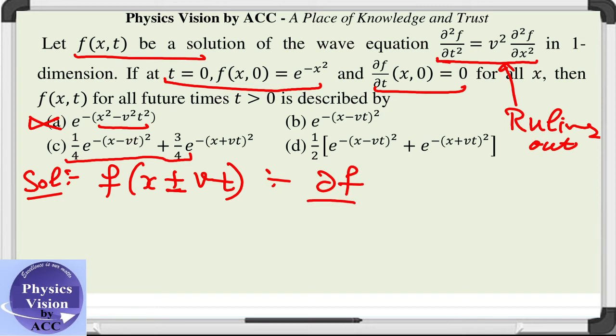We will check the boundary condition, the derivative of f with respect to t at t is equal to 0, it must be 0. But you take the derivative of option b, what it would be?